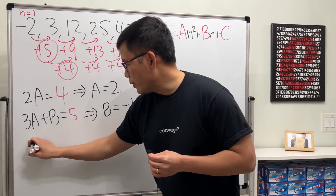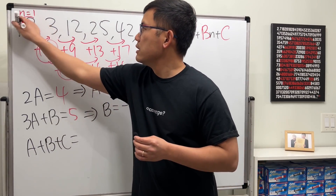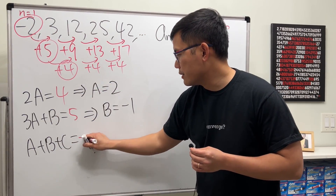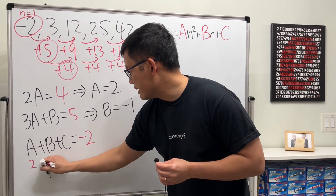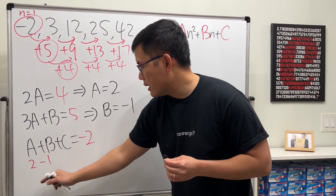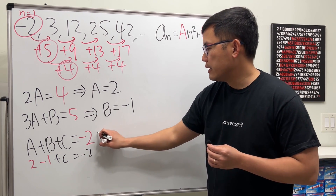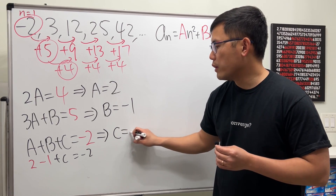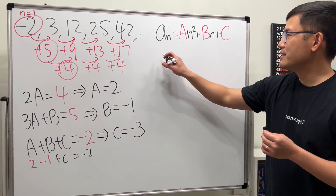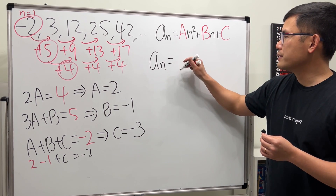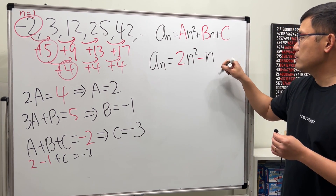Finally, a plus b plus c equals the first term, which is negative two. We have two minus one, which equals one, so c equals negative two minus one, which means c equals negative three.